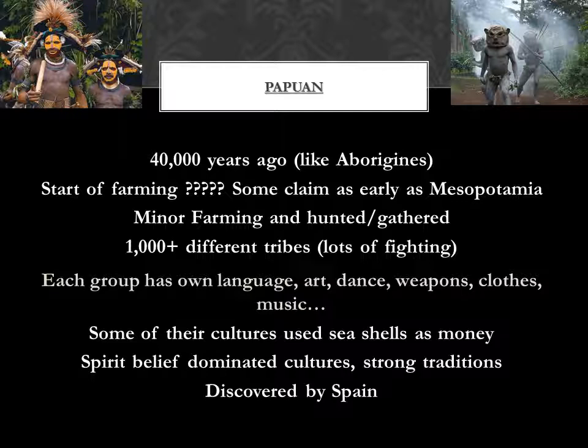So let's talk about the Papuans. You see pictures of two different tribes — they look very different. Like the Aborigines, they get there about 40,000 years ago, and we assume they walked. They start farming, but we don't really know when. Some people claim they started farming before the first people in the Mesopotamia area; some claim they started at the same time. We're not entirely sure, because the farming they started was very, very minor — they relied mostly on hunting and gathering, and a lot of these tribes still rely heavily on hunting and gathering.